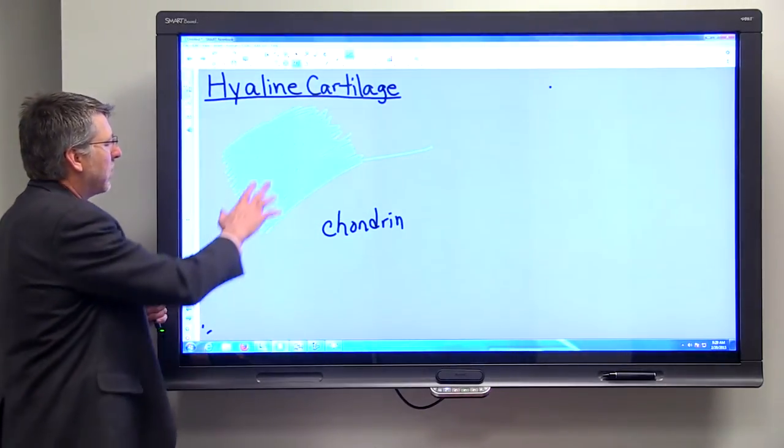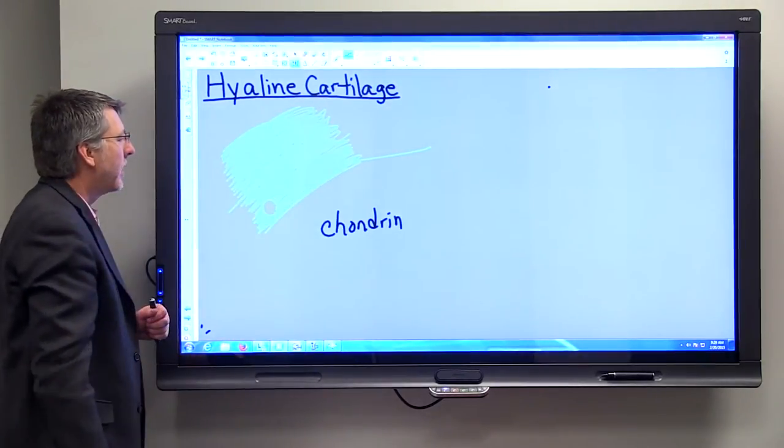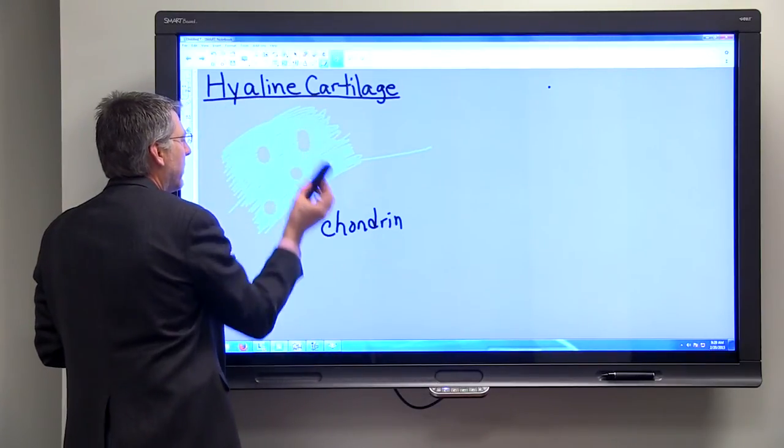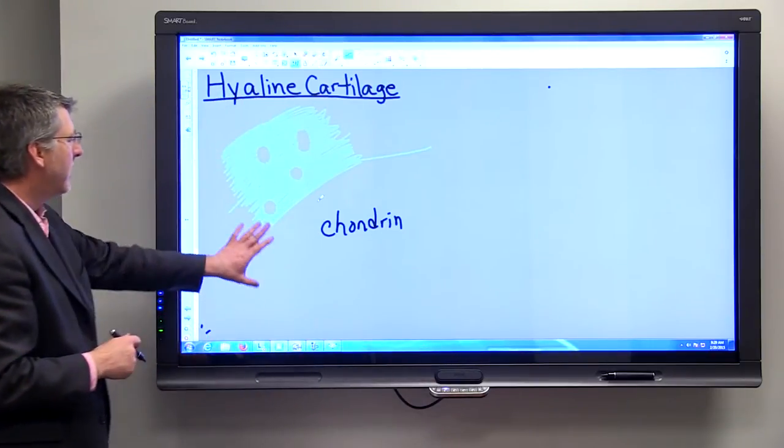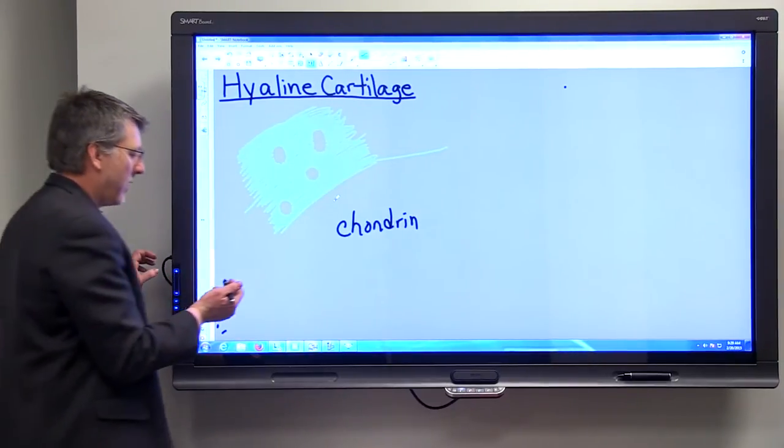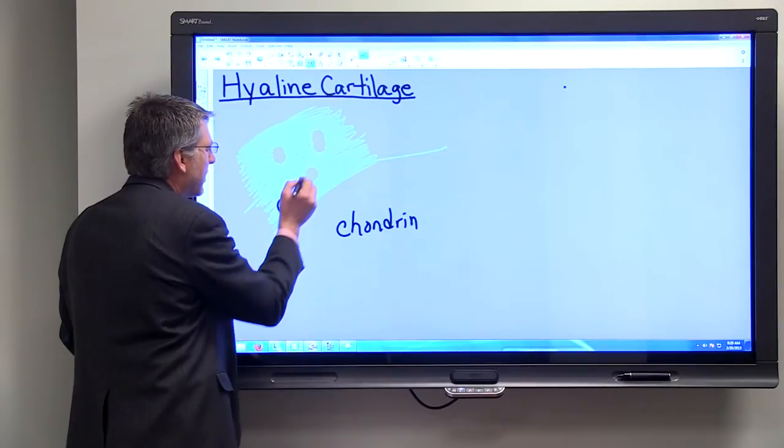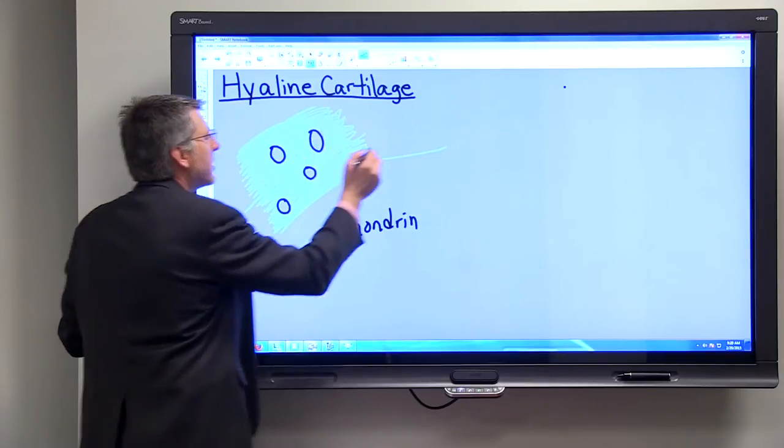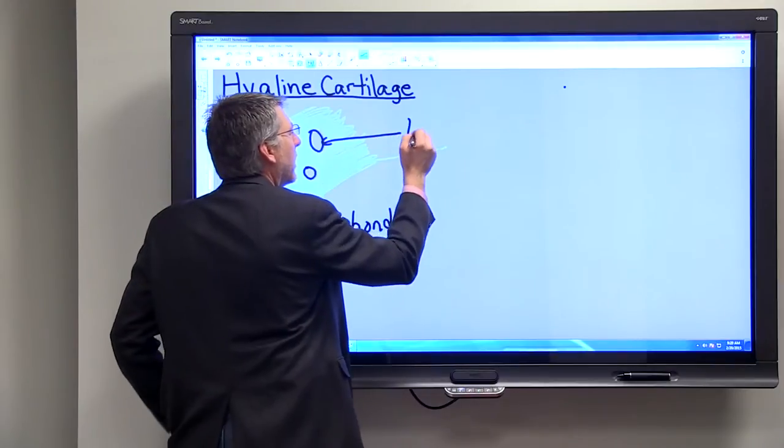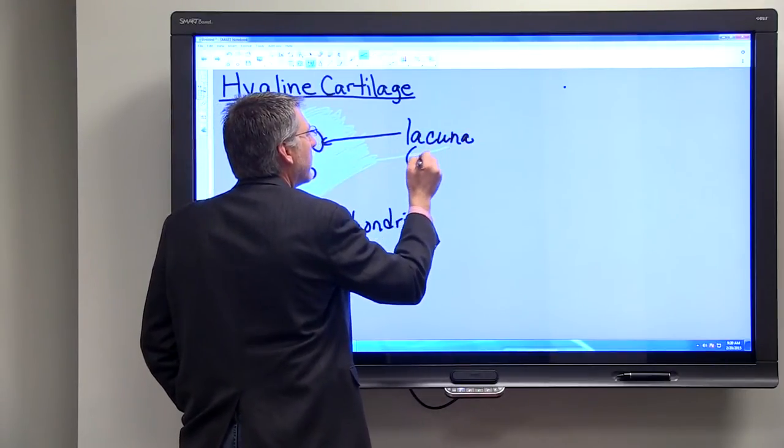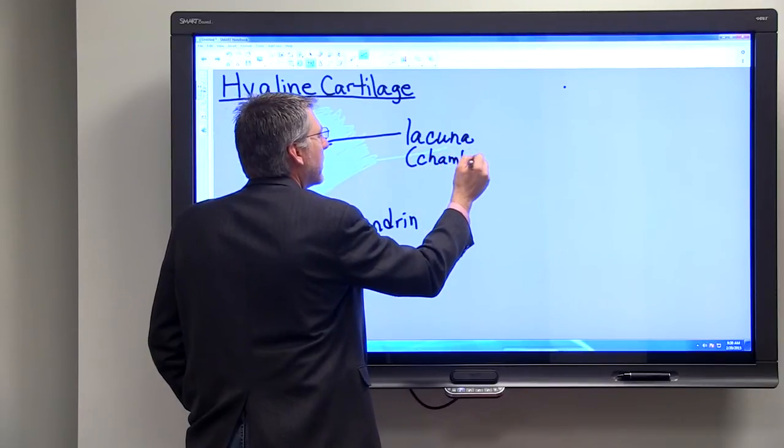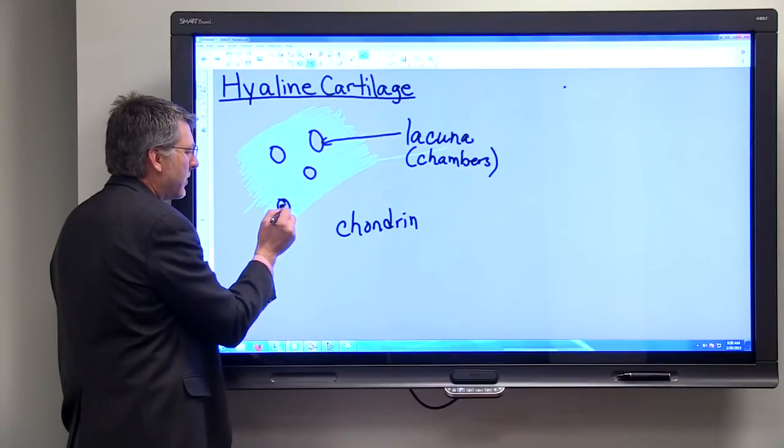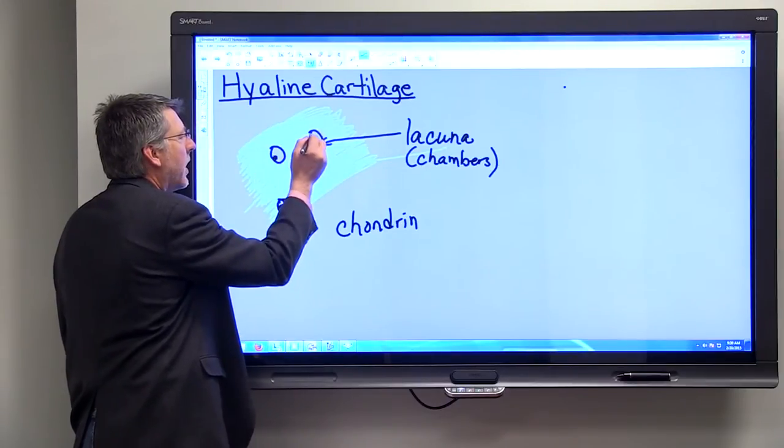And I just took a blue marker and colored in a spot here on the board to represent the chondrin. And then we can take the eraser and just make a couple of spots within that chondrin. So it's a semi-solid substance. Imagine little chambers within that semi-solid ground substance. The little chambers are called lacuna. And within these lacuna, we find the cells, and of course the cells are called chondrocytes.